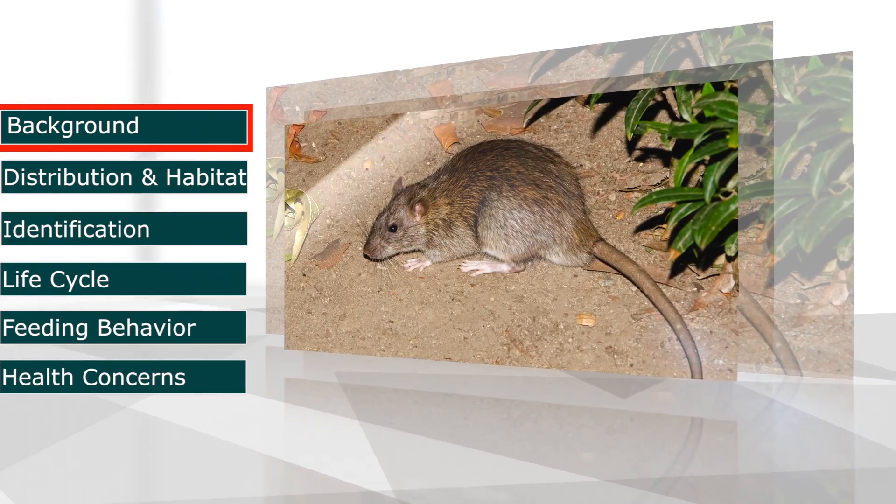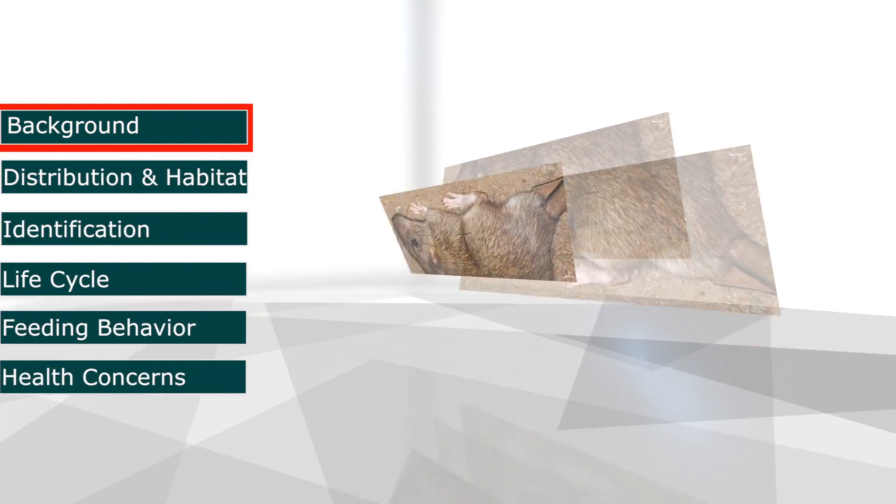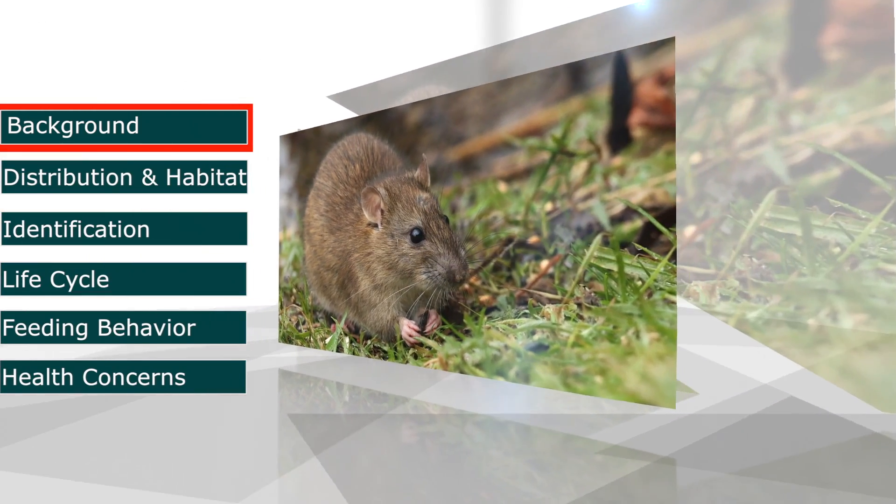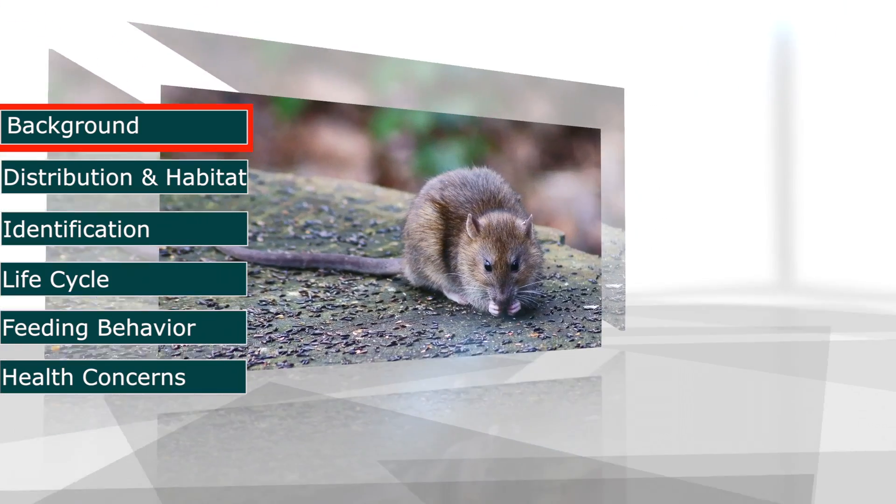The Norway Rat has several common names, including the Brown Rat, Common Rat, Wharf Rat, and Sewer Rat. While not originally from Norway, they were first identified there.